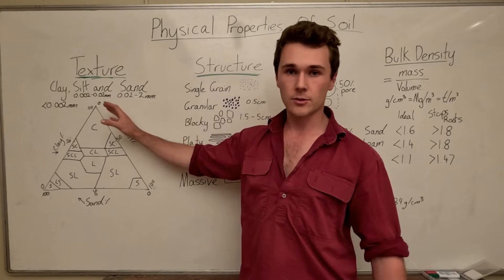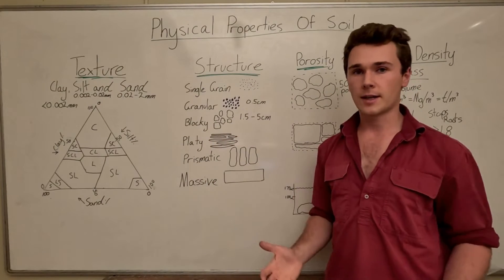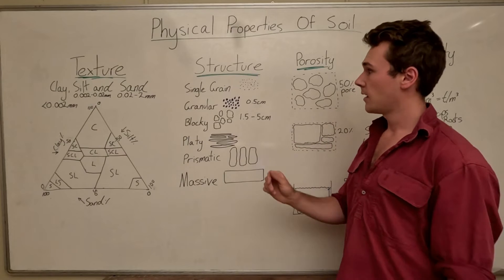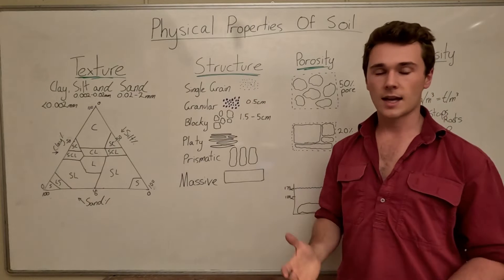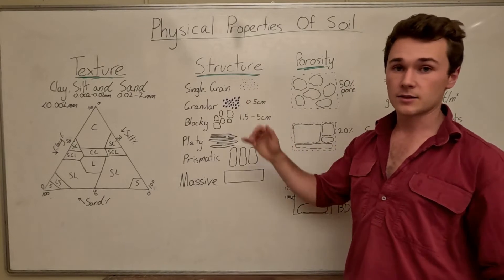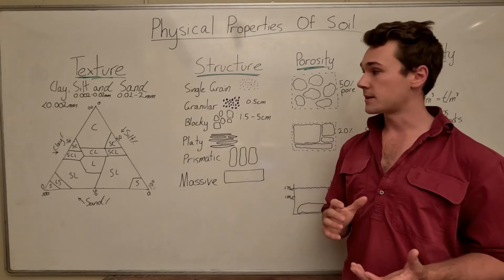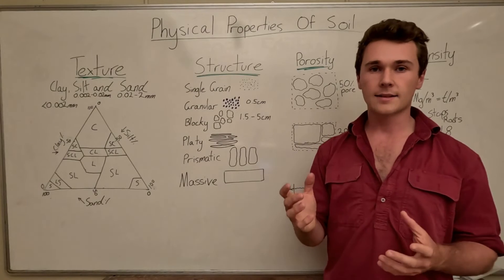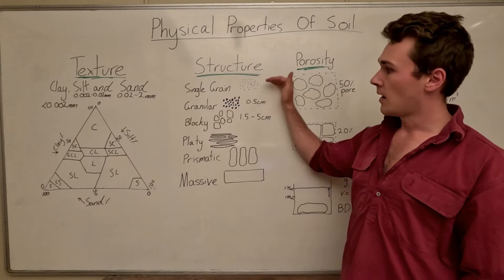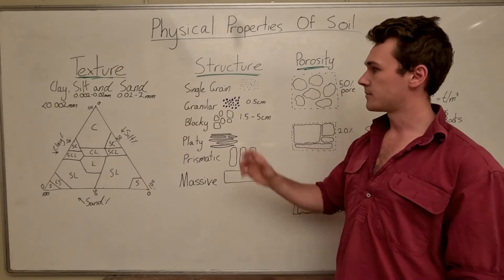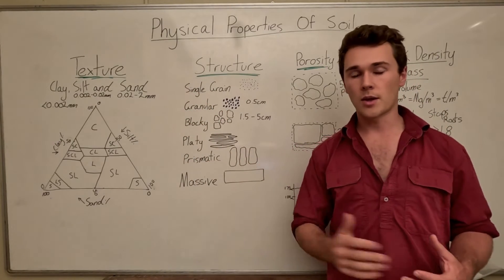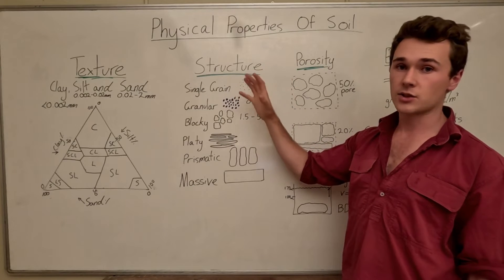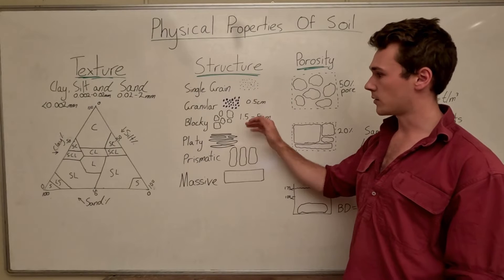From texture we have structure — how soil particles clump together, which determines a whole range of characteristics. First, single grains are just individual bits; think of a sandy beach where you can see individual grains. Next, granular structure is about half a centimetre in size and is probably the best structure you can get. It's not too compact or too light, so erosion risk is lower and it doesn't prevent water flow, gas exchange, or root movement.